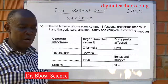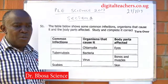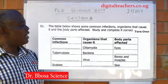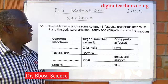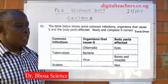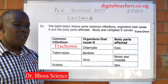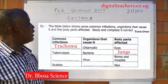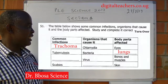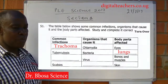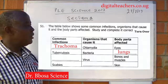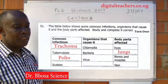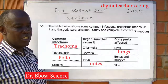The table below shows some common infections, the organism that causes each, and the body parts affected. Study and complete correctly. Trachoma is caused by chlamydia; it affects the eye. Tuberculosis is caused by bacteria; it affects the lungs but generally the whole body. Polio is caused by viruses; it affects bones and muscles. Scabies is caused by mites; it affects the skin.